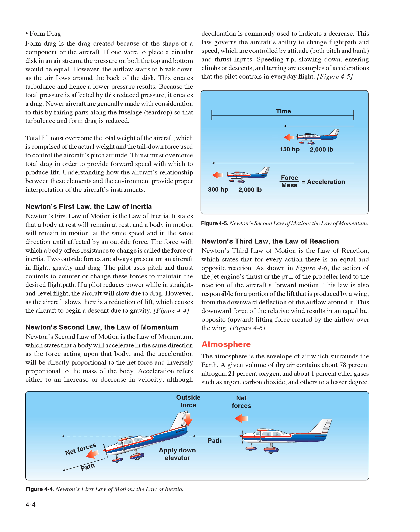Form Drag. Form drag is the drag created because of the shape of a component or the aircraft. If one were to place a circular disk in an air stream, the pressure on both the top and bottom would be equal; however, the airflow starts to break down as the air flows around the back of the disk, creating turbulence and hence a lower pressure. Because the total pressure is affected by this reduced pressure, it creates a drag. Newer aircraft are generally made with consideration to this by fairing parts along the fuselage in a teardrop shape, so that turbulence and form drag is reduced. Total lift must overcome the total weight of the aircraft, and thrust must overcome total drag in order to provide forward speed with which to produce lift.